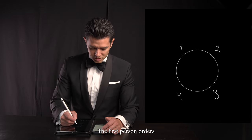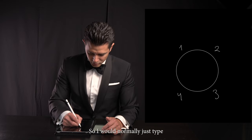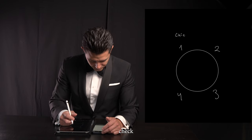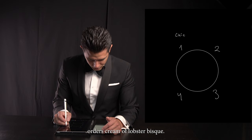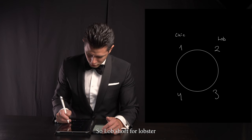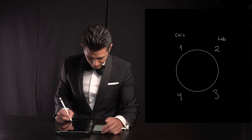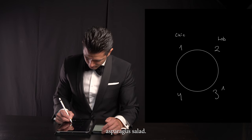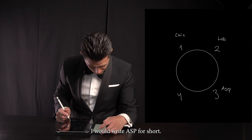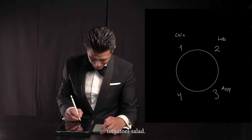The first person orders the appetizer chicken and noodle broth, so I would normally just write 'chick' for short. The second person orders cream of lobster bisque, so 'lob' short for lobster. The third person would order asparagus salad, and I would write 'asp' for short.